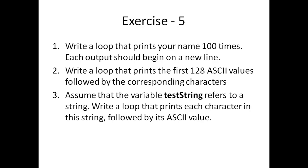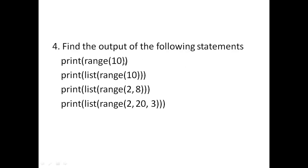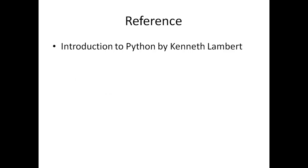I have given four exercises. First, write a loop that prints your name 100 times, each output on a new line. Second, write a loop that prints the first 128 ASCII values along with the corresponding characters. Third, assume the variable 'testing' refers to a string — write a loop that prints each character followed by its ASCII value. Fourth, find the output of: list(range(10)), list(range(2,8)), and list(range(2,25)). This is a reference to Fundamentals of Python by Kenneth Lambert. Thank you.